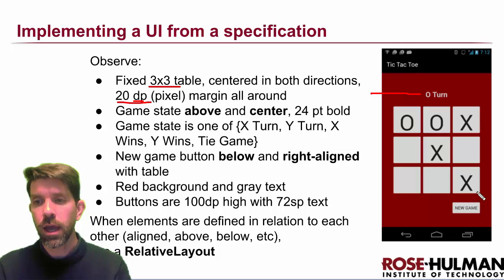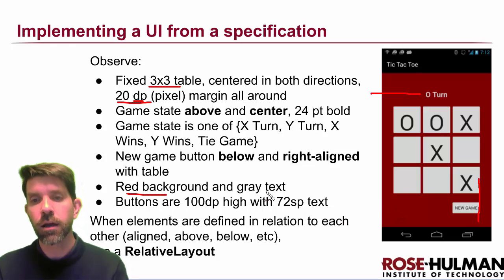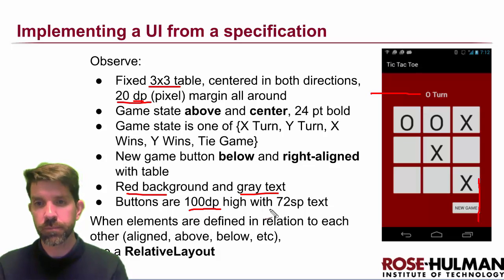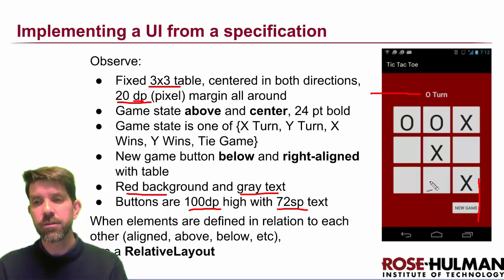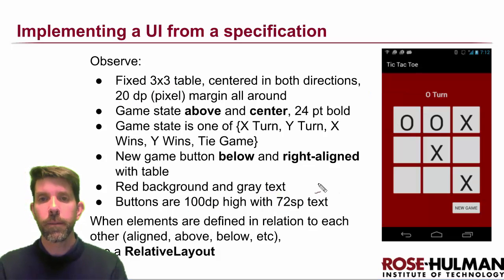There's a New Game button below, right-aligned with the table — relative layouts will let us do that. We want a red background, specifically Rose-Holman red, with some gray text. The buttons are fixed at 100dp high, which makes them look square on screen. For mine it worked out well to have 72 scale-independent pixel text for the X's and O's. We have centered content and right-aligned content, so a relative layout is the right choice.